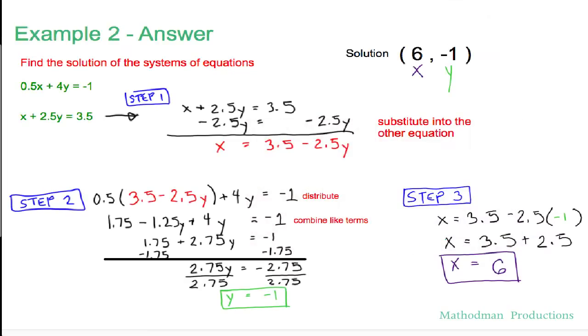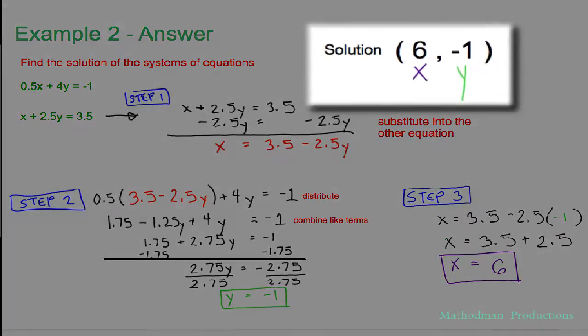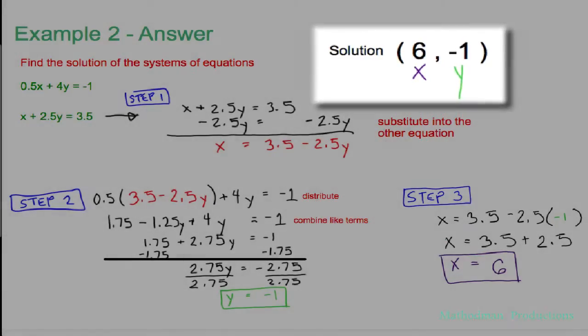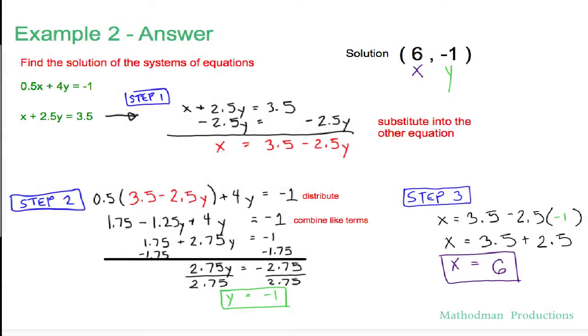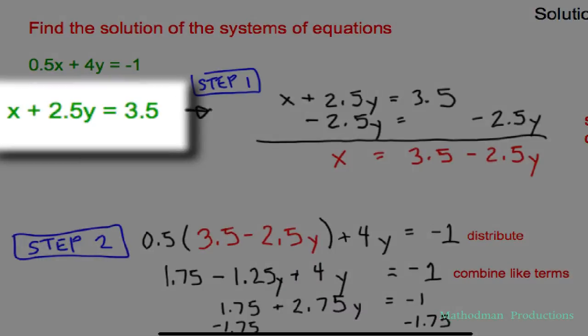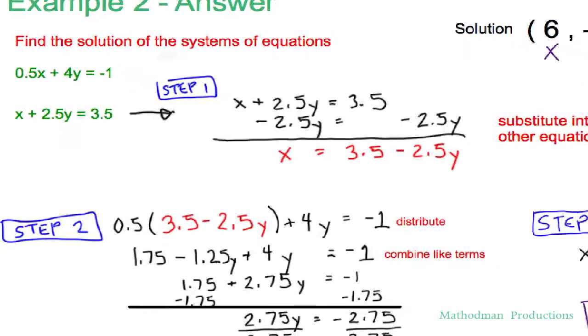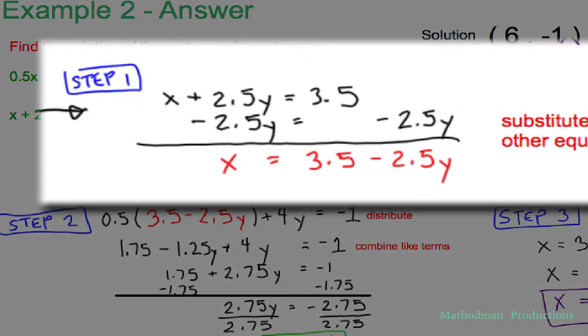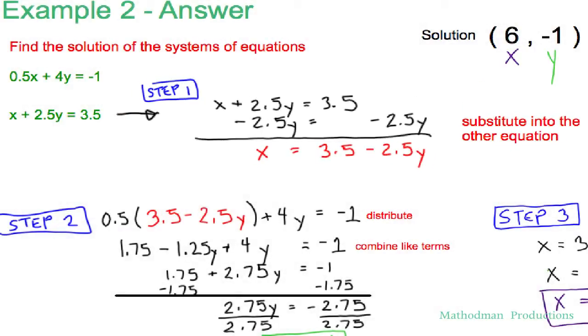Alright, here's the answer for example 2. The solution is x equals 6, y equals negative 1. So like what I told you, start off with the easier equation which is the second one because it's easier to isolate x for it. That is step 1 right here. You get x equals 3.5 minus 2.5y when you solve for x.